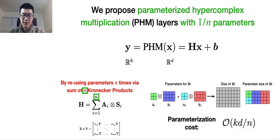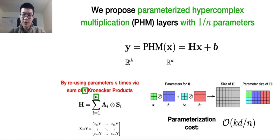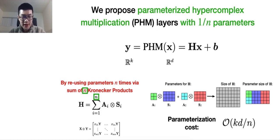Compared with the previously shown FC layers, we replace the matrix W with matrix H, which is still of the same size — a D-by-K matrix. However, we construct matrix H using a sum of n Kronecker products. Kronecker products reuse the parameters, and by using n independent Kronecker products we can reuse the parameters n times, allowing us to have only 1-over-n learnable parameters in such a layer. Since this is a parameterized hyper-complex multiplication, we call this the PHM layer.